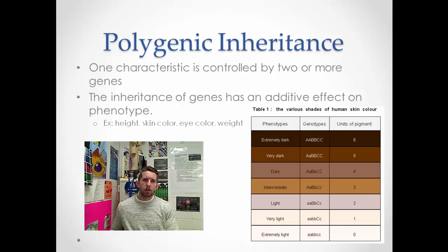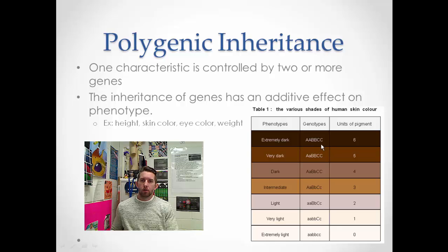Polygenic inheritance — the prefix poly means many — means one characteristic is controlled by two or more genes. Examples include height, skin color, eye color, and weight. Looking at this graphic for skin color, genes A, B, and C control skin color. The more dominant alleles you get, the darker your skin tone; the more recessive alleles, the lighter your skin tone. It's on a continuum — a bell curve.